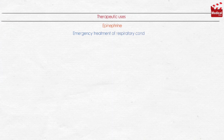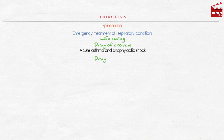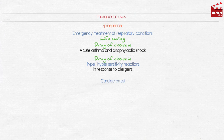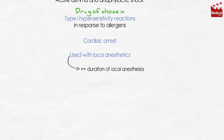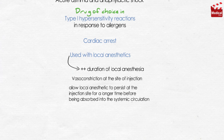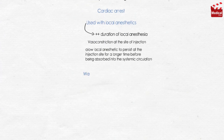Epinephrine is the primary drug used in emergency treatment of respiratory conditions and can be life-saving. It is the drug of choice in treatment of acute asthma and anaphylactic shock, and also the drug of choice for type 1 hypersensitivity reactions including anaphylaxis in response to allergens. It may also be used to restore cardiac rhythm in patients with cardiac arrest. It is used with local anesthetic solutions to increase the duration of local anesthesia by producing vasoconstriction at the site of injection, allowing the local anesthetic to persist longer before being absorbed into systemic circulation. Very weak solutions of epinephrine can also be applied topically to vasoconstrict mucous membranes and control capillary bleeding, such as nosebleeds.